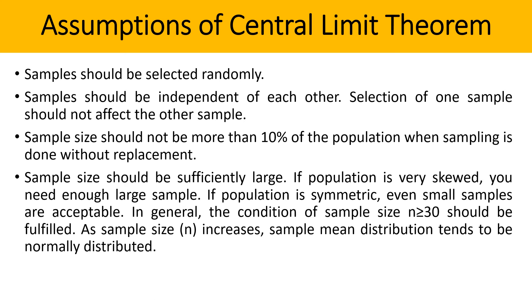Sample size should be sufficiently large. If population is very skewed, you need large enough sample. If population is symmetric, even small samples are acceptable. In general, the condition of sample size is n ≥ 30 should be fulfilled. As sample size increases, sample mean distribution tends to be normally distributed.